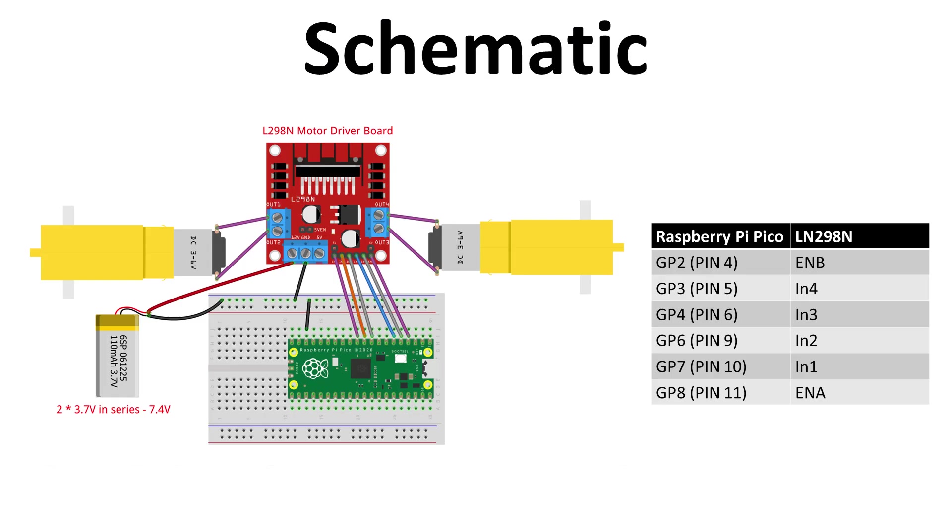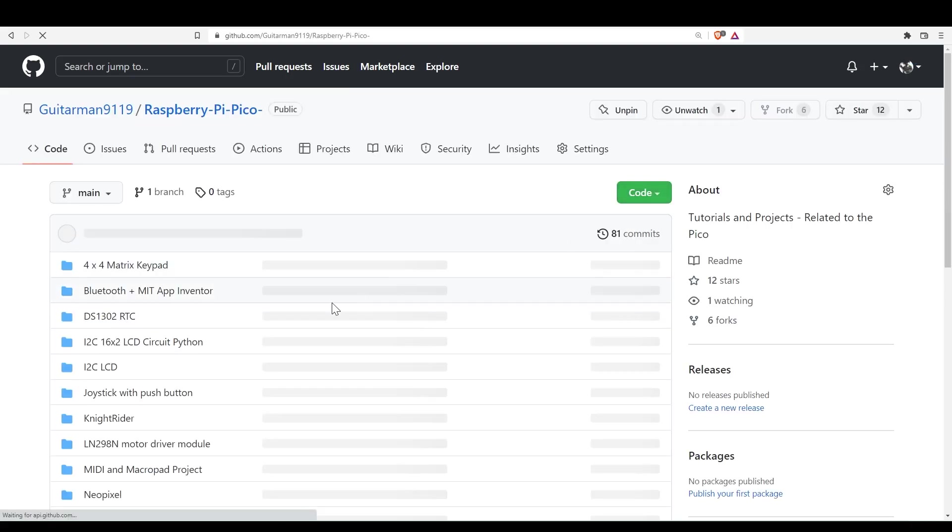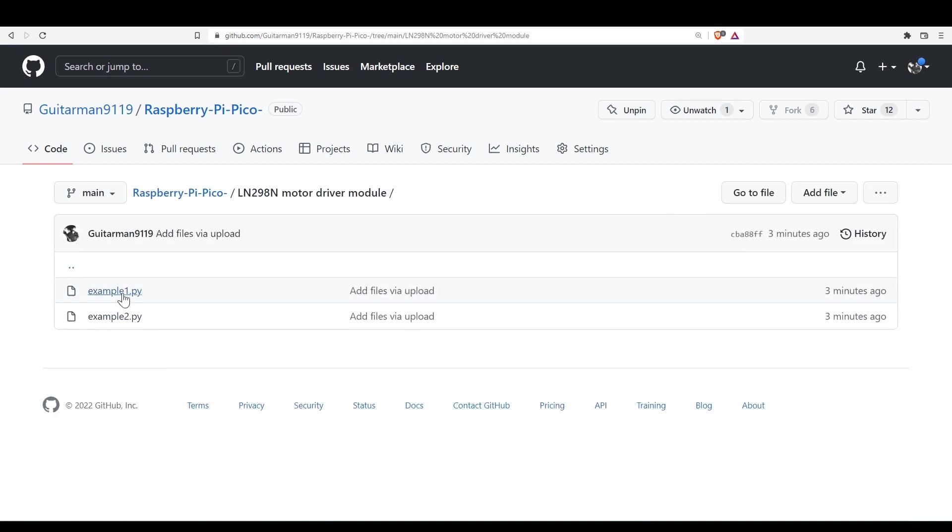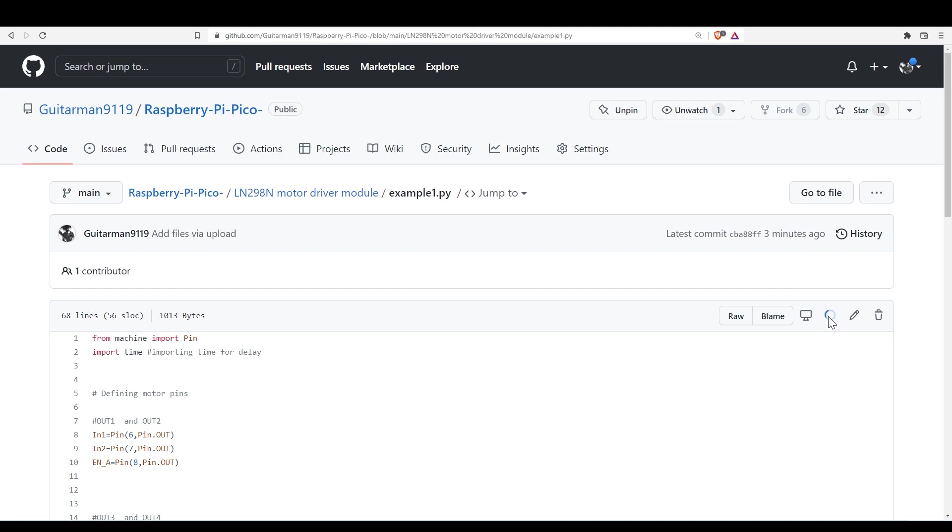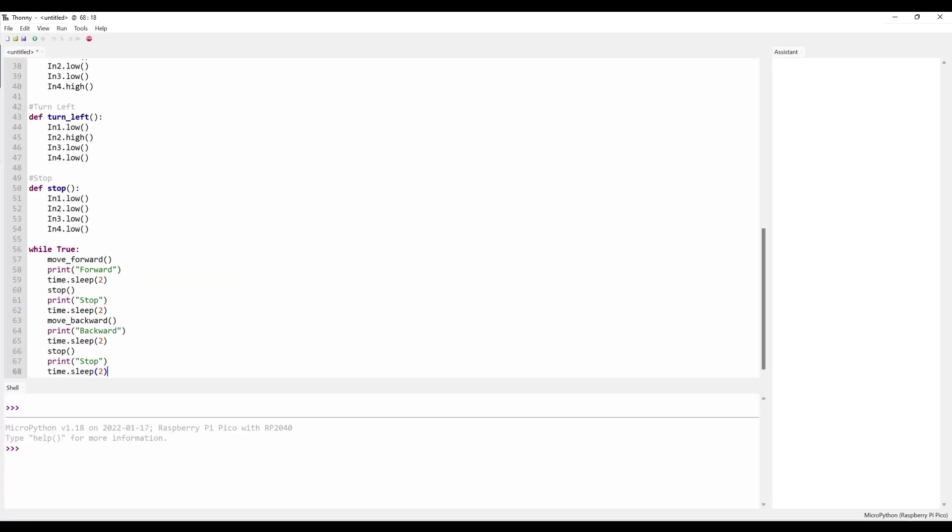We will connect the module as indicated on the schematic diagram for our first demonstration. Make all the necessary connections as shown. After making all the connections head over to my GitHub repository link given in the description where I have included all the code for each example we will discuss. Open example.py and copy all the code and then inside Thonny create a new file and paste the code.